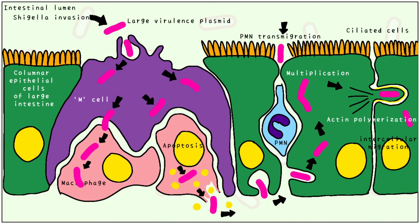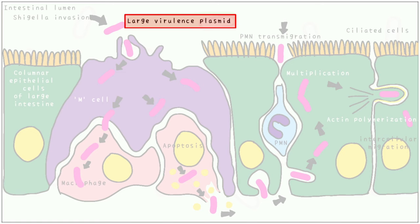Another possible path of entry is through PMN transmigration. The three important points to remember are: number one, a large virulence plasmid; number two, entry through M cells; and number three, spread through actin polymerization.